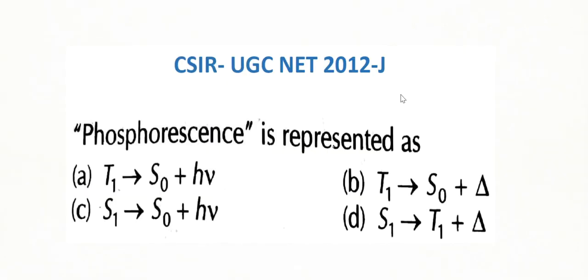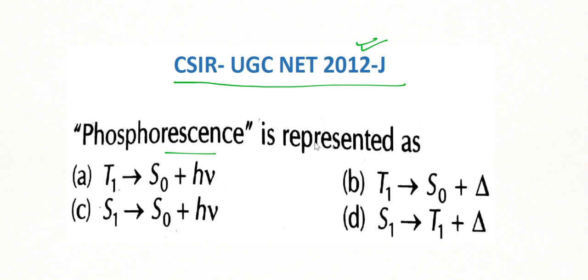Let's start solving previous year questions. The first question is from the CSIR UGC NET exam, July/June 2012. This question asks: phosphorescence is represented as — and it is based on the Jablonski diagram.